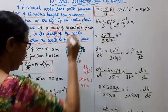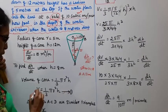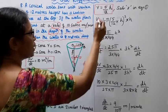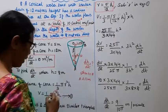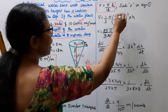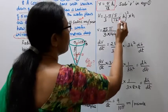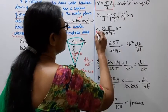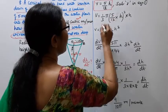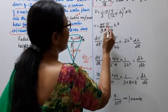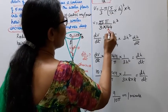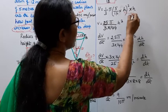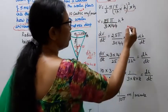Substituting into the volume formula: V = (1/3)πr²h, where r = (5/12)h. So V = (1/3)π(5/12 · h)² · h = (25π / 144) · (1/3) · h³.